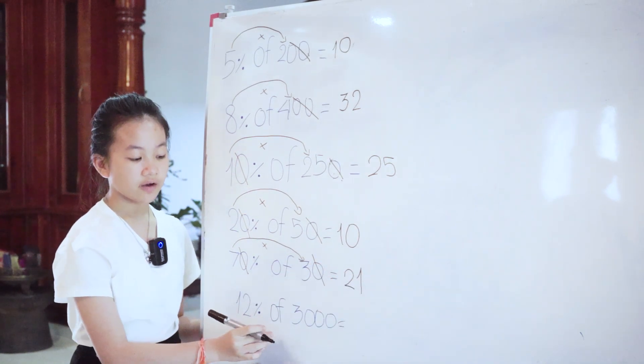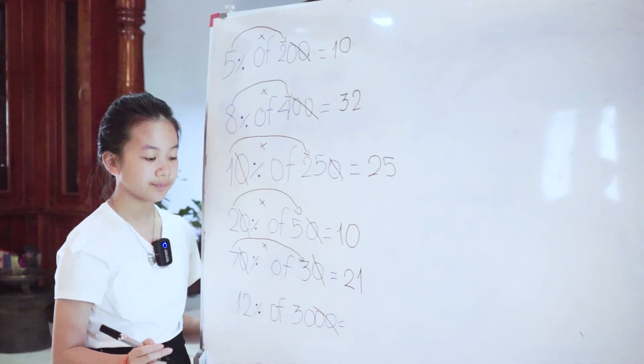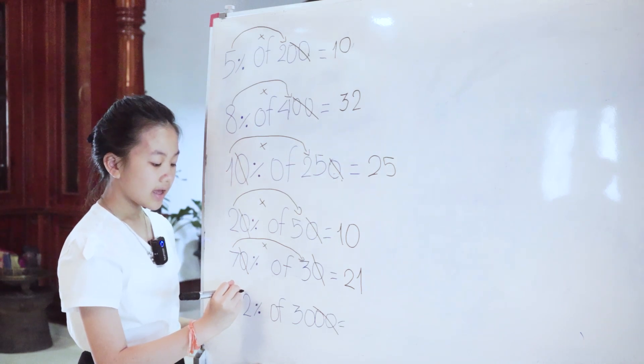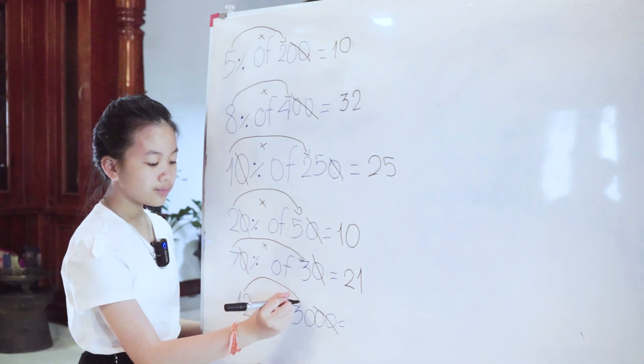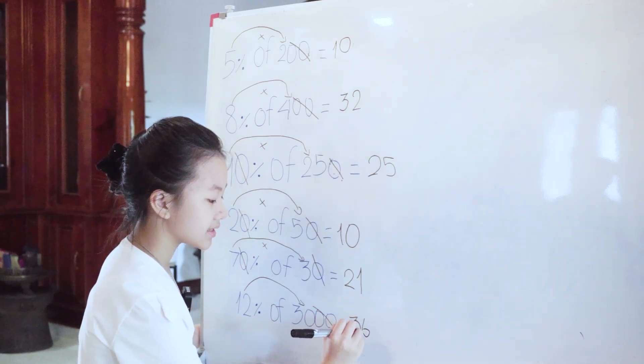12% of 3,000, cut two zeros from 3,000. Then 12 x 30 equals 360.